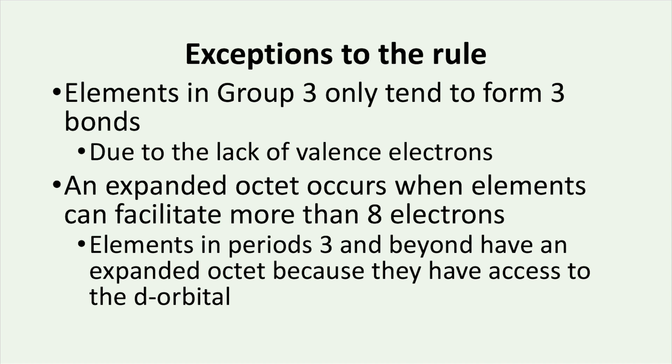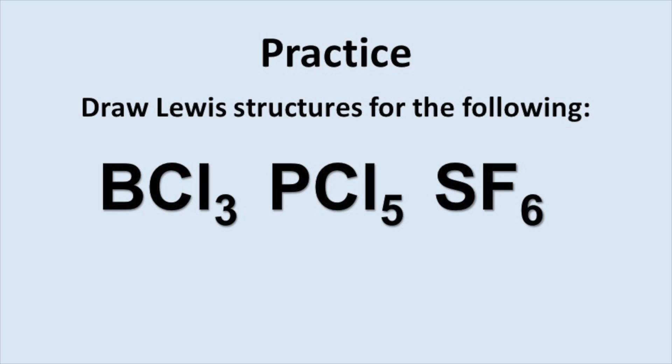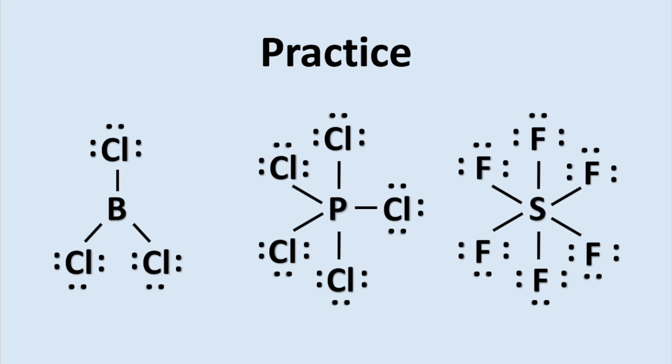The reason sulfur and phosphorus can have an expanded octet is because they have access to the d orbital. This allows both elements to be stable with an octet, but phosphorus can have up to 10 electrons and sulfur can have 12. With this in mind, try drawing these Lewis structures: boron trifluoride, phosphorus pentachloride, and sulfur hexafluoride. Here are the correct structures so you can check your answers.